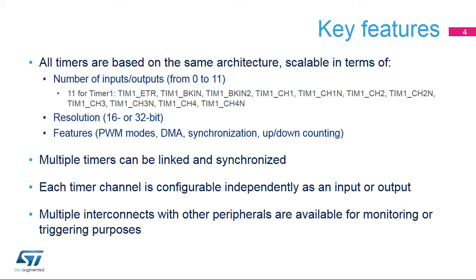All timers are based on the same architecture and are available in several derivatives. They mainly differ in the number of inputs and outputs, from a pure time base without any IOs to an advanced control version with 11 IOs. Most timers feature 16-bit counters, while some have 32-bit counters. Some features may not be present on the smallest timer derivatives — for example, DMA, synchronization, and up-down counting modes.